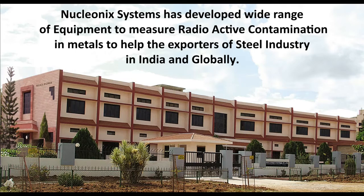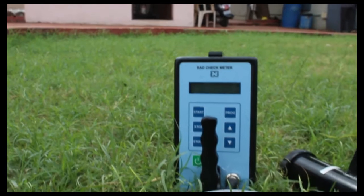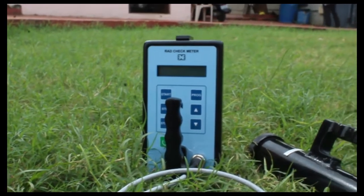To help the exporters of steel industry in India and globally, RadCheck Meter is an important handheld portable instrument developed to measure radioactive contamination.